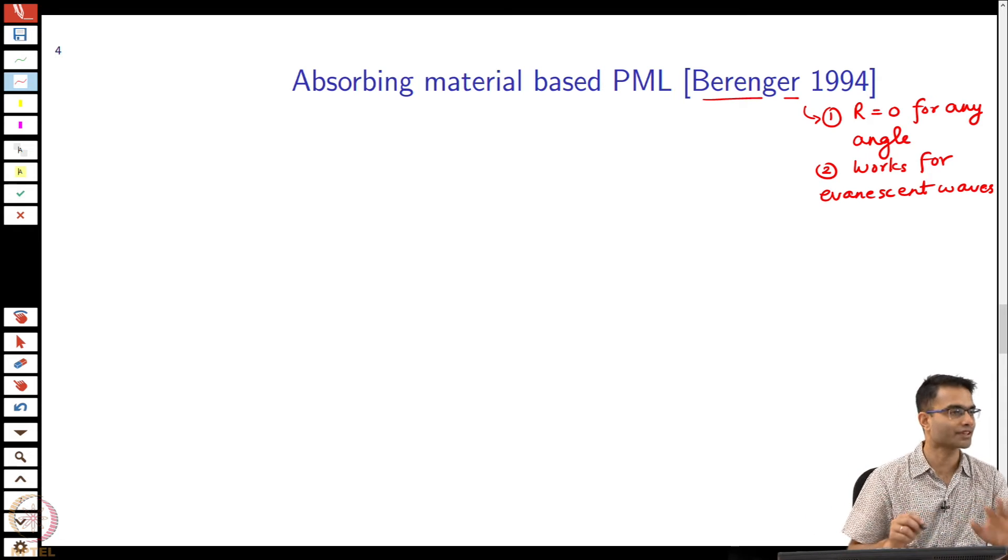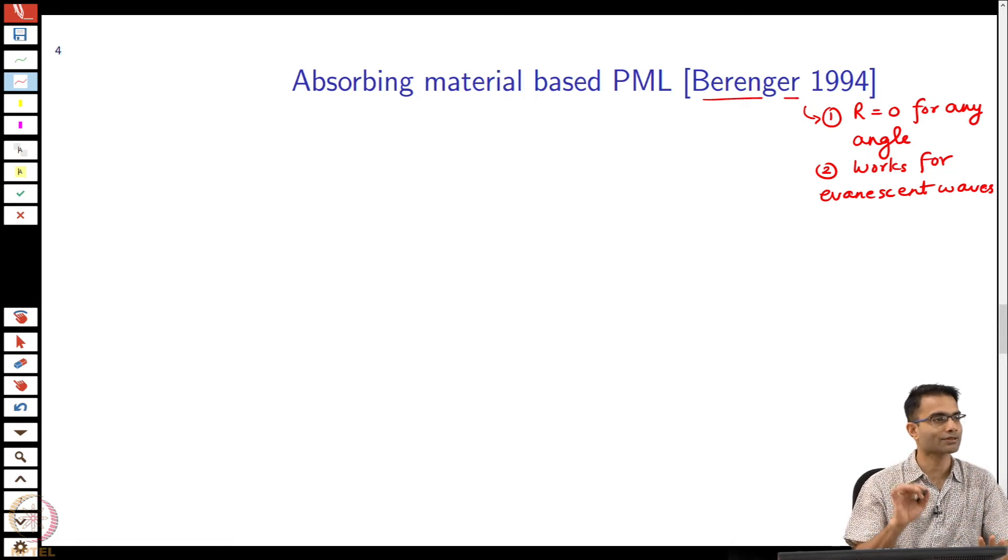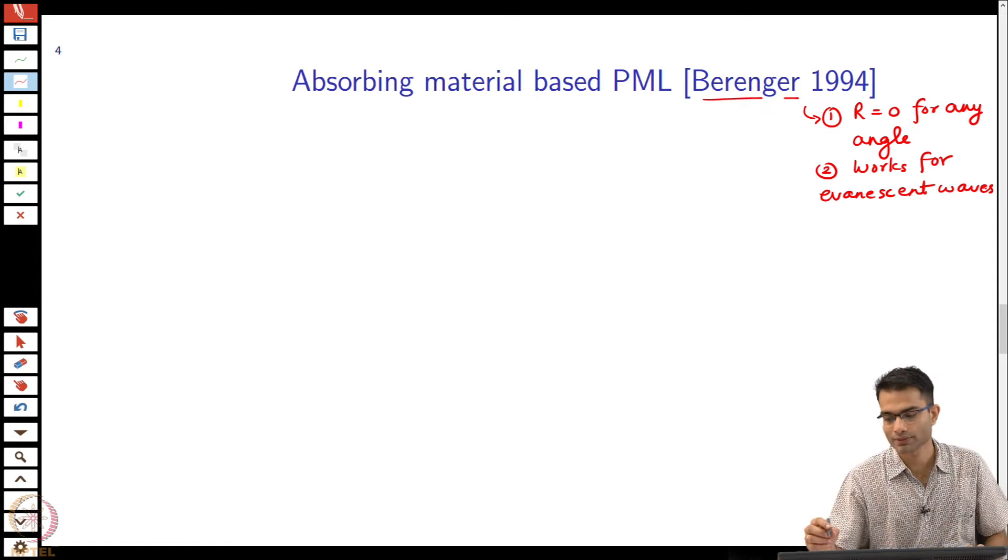And the second one is it works for evanescent waves. In some sense this is our wish list, and nature is kind enough for us that this so-called PML thing satisfies both these items of the wish list, which is why it was a very good discovery in the field.